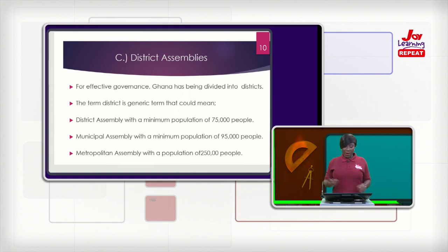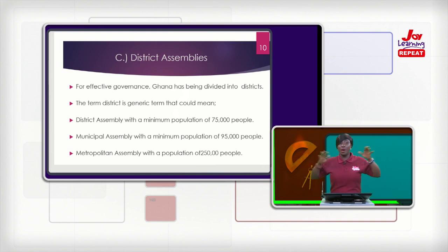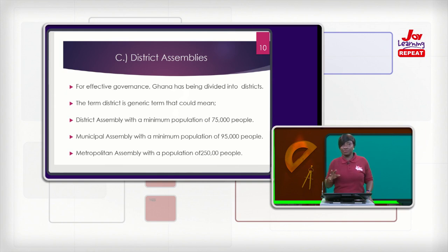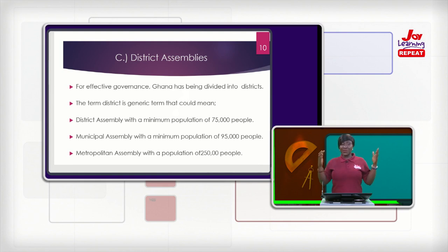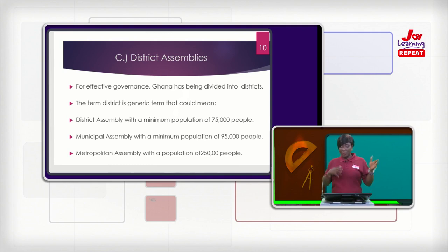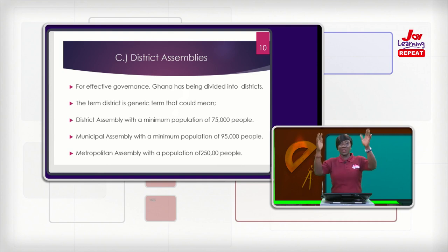When we come to a municipal assembly, the population ranges from 75,000 to 95,000 people. When a particular area or locality has this population, it has the mandate to gain a municipal assembly. For example, Ashaman is now a municipality, so its population ranges between 75,000 to 95,000 people. Then we talk about metropolitan assemblies — they range from a population of 95,000 to 250,000 people.